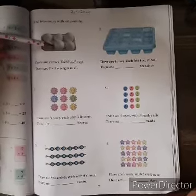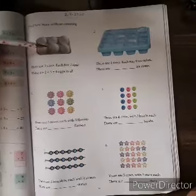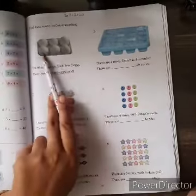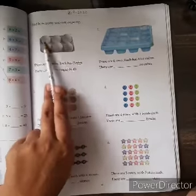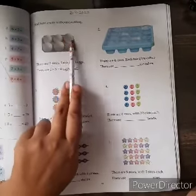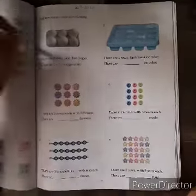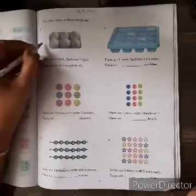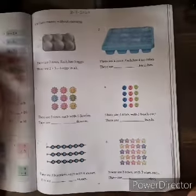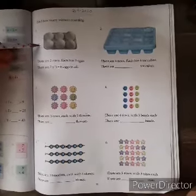We will first count the number of rows. Rows means the lines that you are sitting in, in the class. These are rows. How many rows are here? This row is one and this row is two. So how many rows? Two rows.